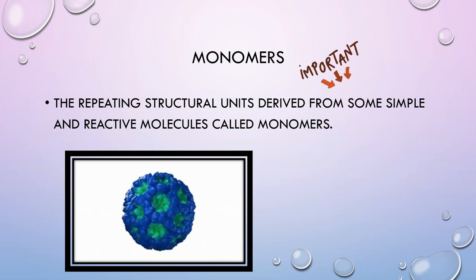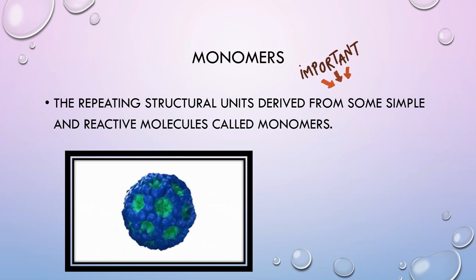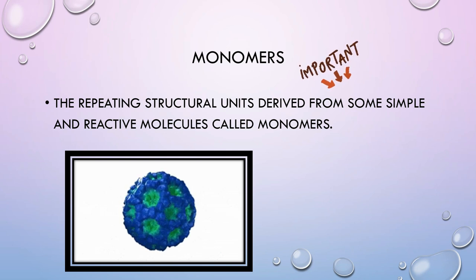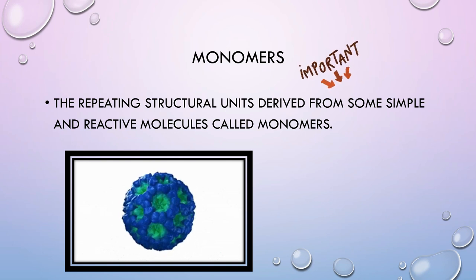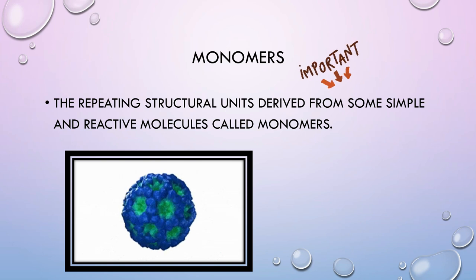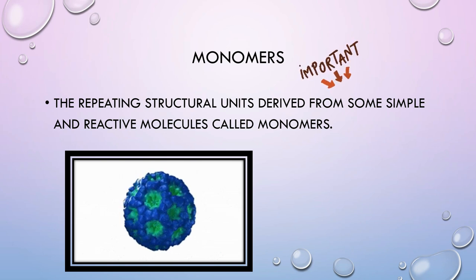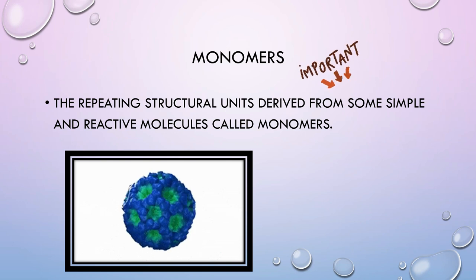Monomers, by definition, are repeating structural units derived from simple and reactive molecules. They are simple structural units which come from simple and reactive molecules — monomers. So they are really, really important.